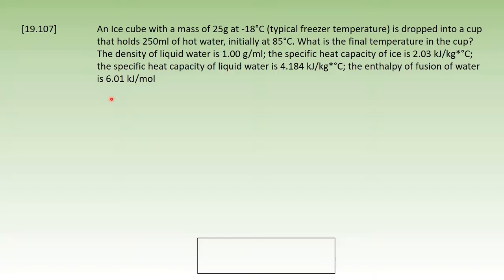Hello there, I'm going to solve exercise 19.107. The exercise is about the mixing temperature of water and ice, specifically how the temperature of 250 milliliters of hot water at 85°C will change if we drop an ice cube with a mass of 25 grams at -18°C in it.